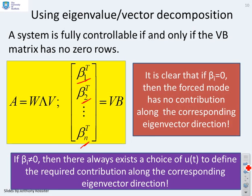So if βᵢ is not equal to zero, then there will always exist a choice of u(t) to define the αᵢ as you please. In other words, to get the required contribution along the corresponding direction.